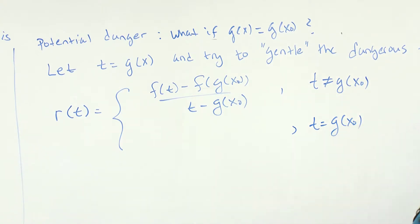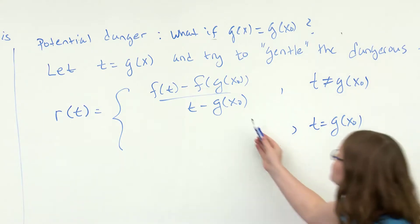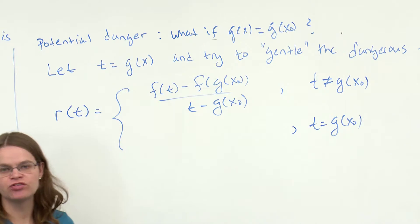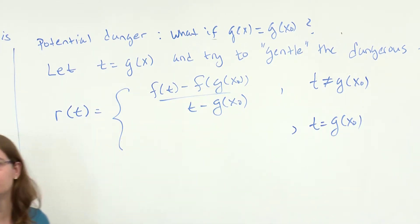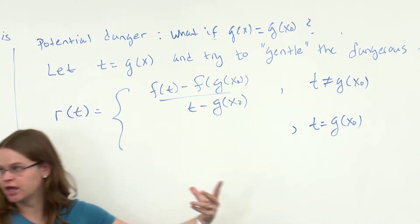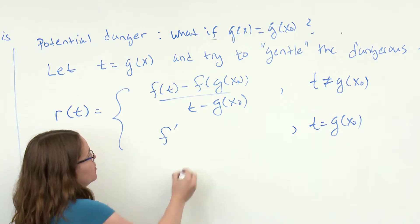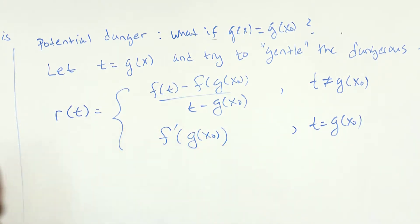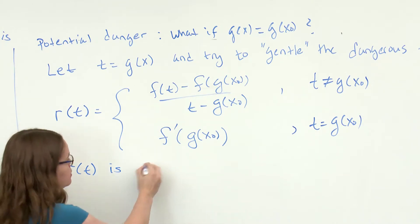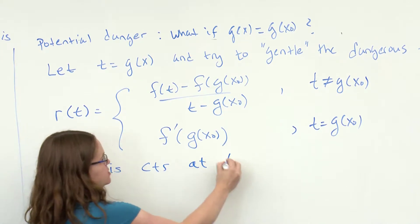What should we plug in when t equals g(x₀)? The most natural thing is the derivative: as t approaches g(x₀), this quotient approaches f′(g(x₀)), which we know exists. So we define r(t) = f′(g(x₀)) when t = g(x₀). We've plugged the hole in a clever way so that r is continuous at t = g(x₀).